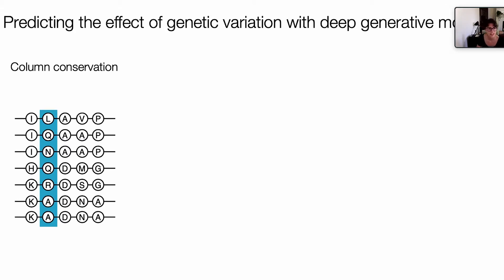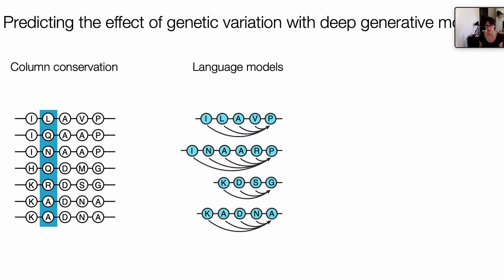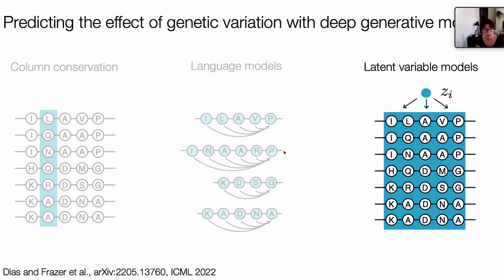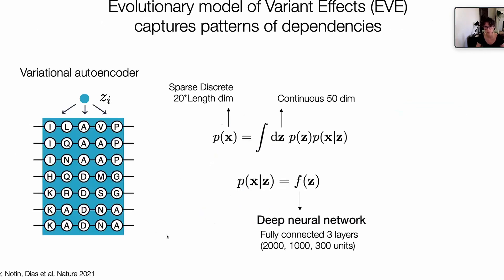In terms of modeling, the idea is to move away from column conservation and look at models that take into consideration complex dependencies along the protein sequence. The community has, broadly speaking, moved into two directions. One is to look at alignment-independent models inspired by natural language processing. The other direction is to look at models based on multiple sequence alignments like latent variable models. I'll be primarily talking about models of this type, but we recently had some work on a natural language model — so if you're interested, please have a look at our paper and get in touch.